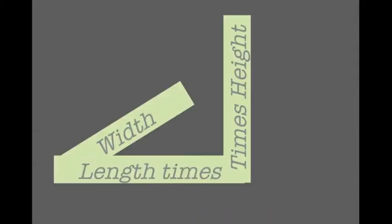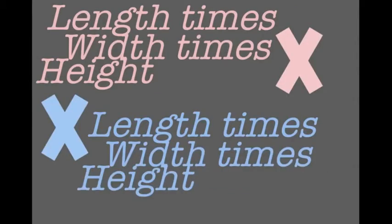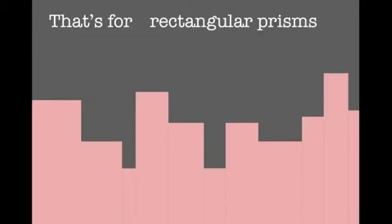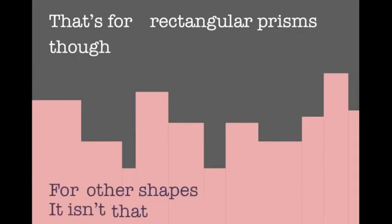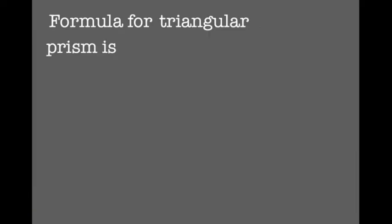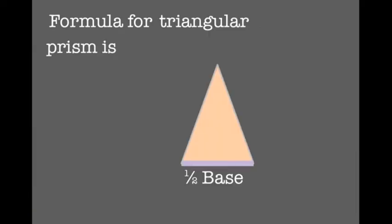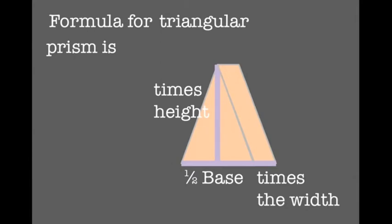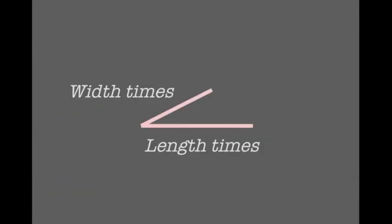Remember, length times width times height. Volume's easy, oh yeah — length times width times height, length times width times height. That's for rectangular prisms, though. For other shapes it isn't that much different. For a triangular prism it's one-half base times height times the width, just like length times width times height.